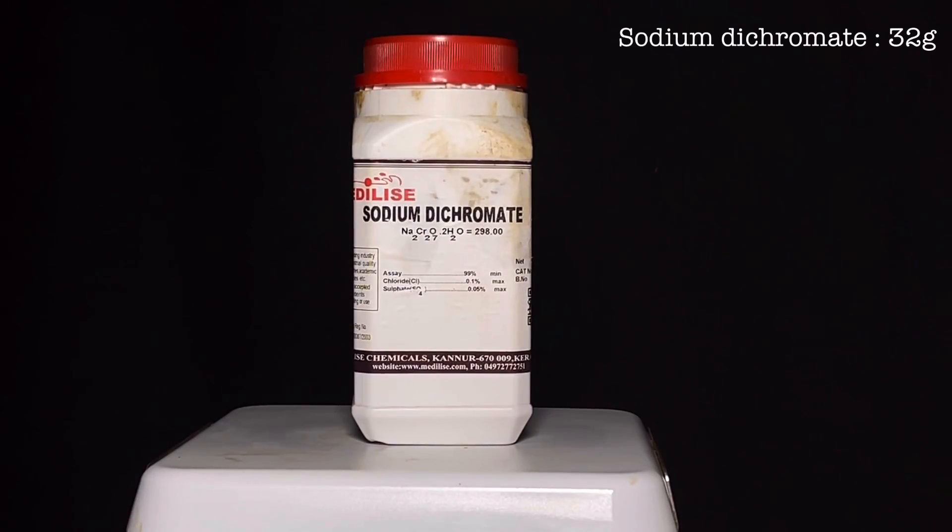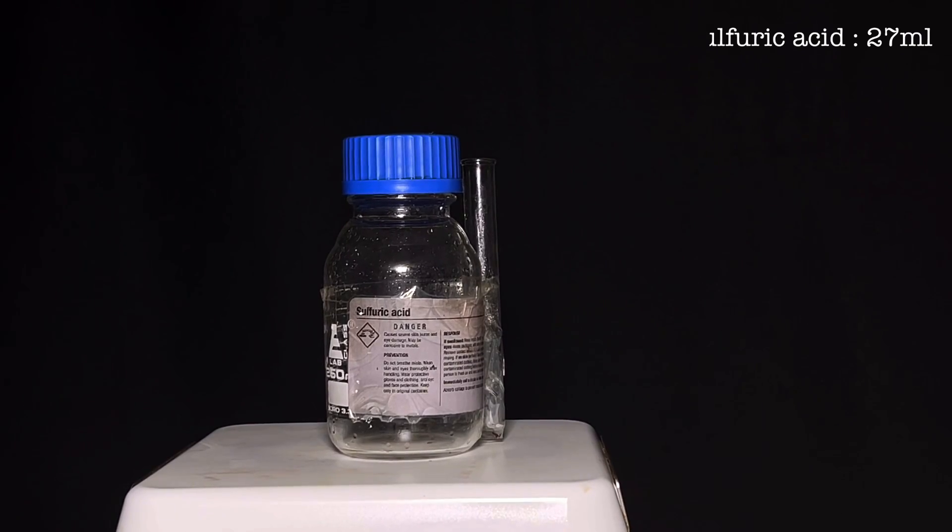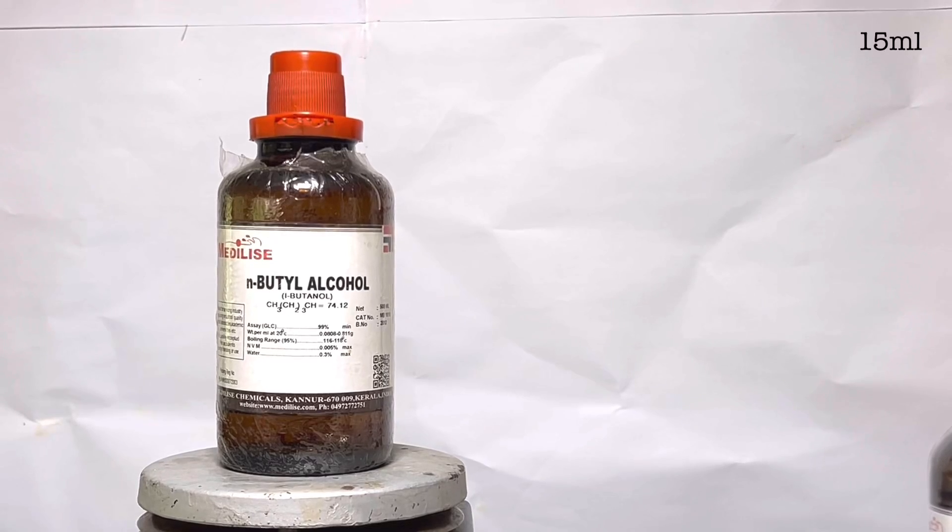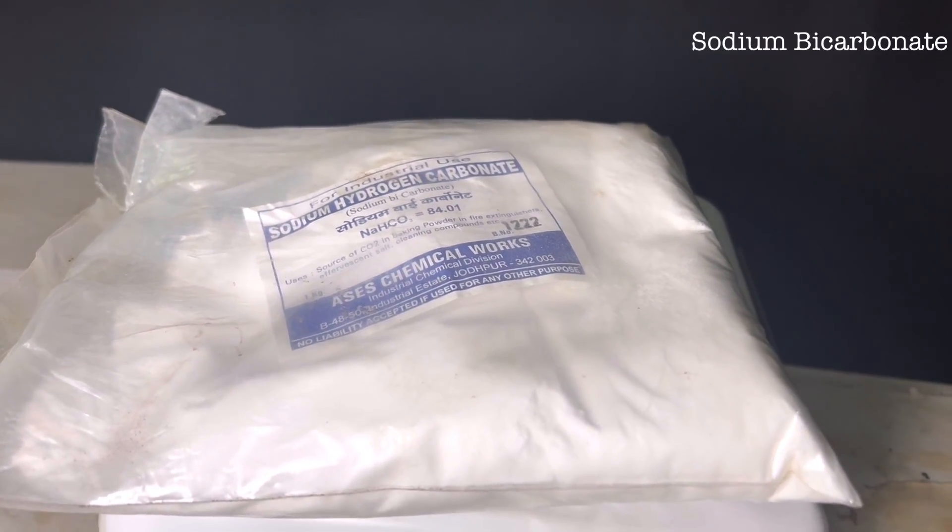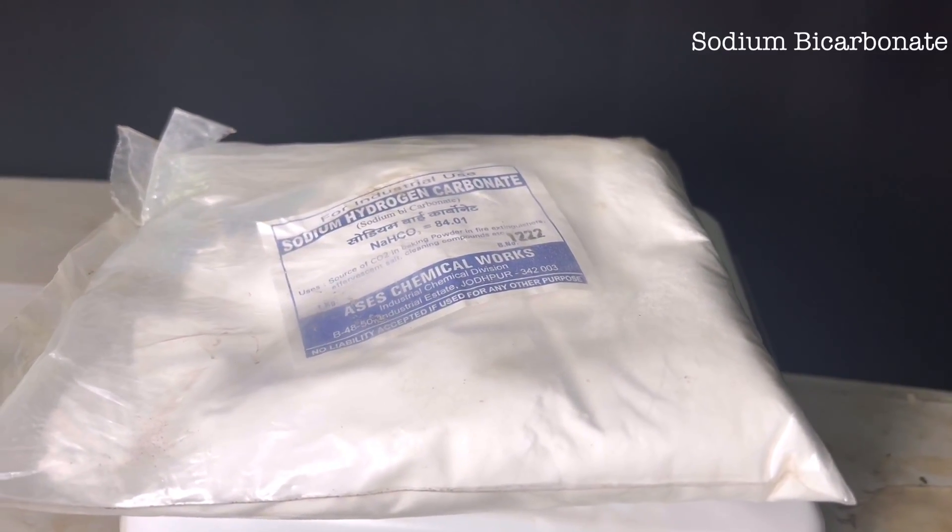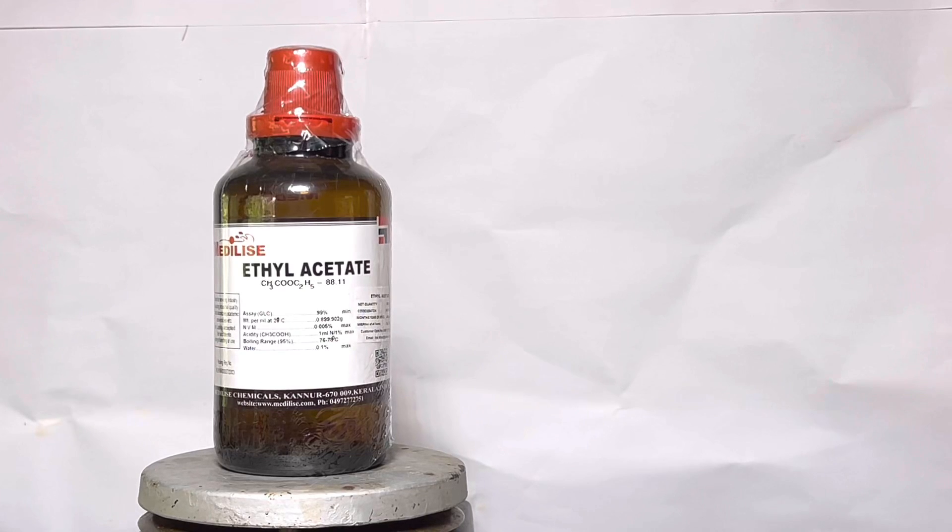For this experiment you will need 32 grams of sodium dichromate, 27 milliliters of 98% aged sulfuric acid, 15 milliliters of 1-butanol. For the purification and extraction part, we will need sodium bicarbonate, 50% aged sulfuric acid and ethyl acetate solvent.